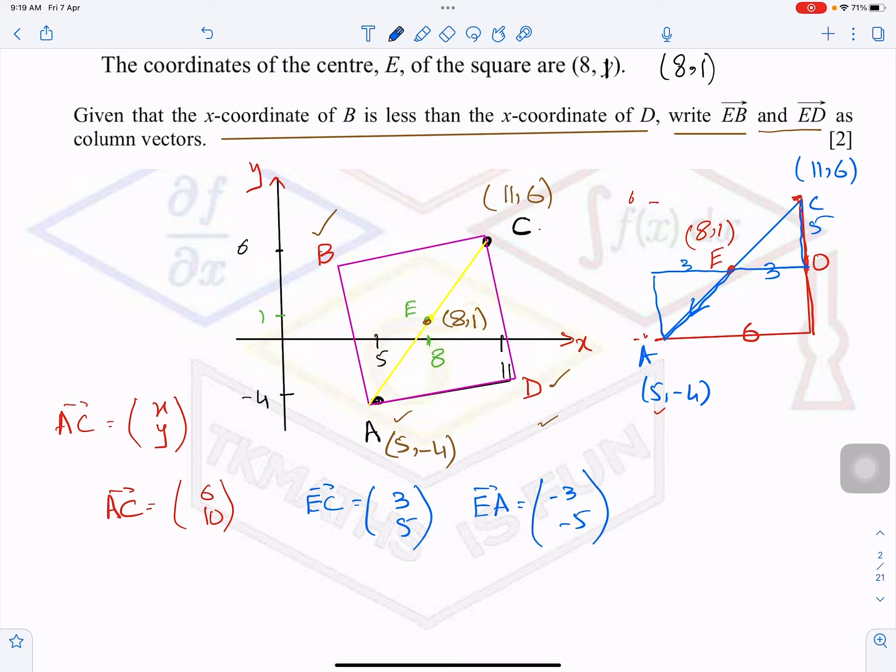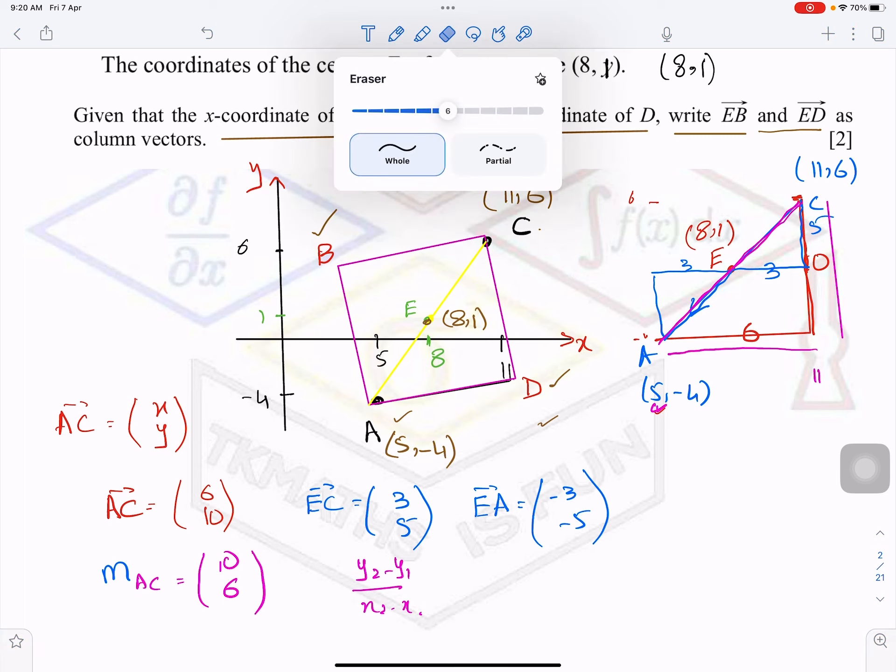Now if I ask you what is the gradient of AC, what is the gradient of line AC? The gradient formula is y2 minus y1 over x2 minus x1. So you consider the y-coordinate first, the difference of y2 minus y1 which is 10, and then this one is 6. So you get 10, oh sorry, I should not write it in column vector form. So let me write it in the gradient form. So it is 10 upon 6, or if you simplify, it will say 5 upon 3.